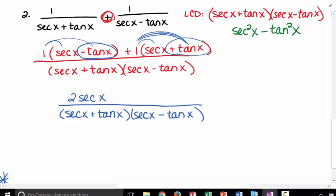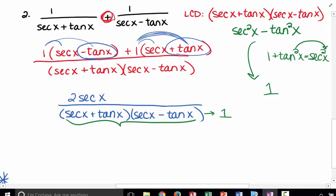Secant x minus tangent x, if you look back at those Pythagorean identities, your Pythagorean identity was 1 plus tangent squared x equals secant squared x. So hopefully you can understand or see that if you subtract tangent squared x to that side, secant squared x minus tangent squared x is actually just equivalent to 1. So this whole denominator right here is really 1. So this whole thing reduces to 2 secant x, and you don't even have that complex fraction anymore. Much more simple to take the derivative of.